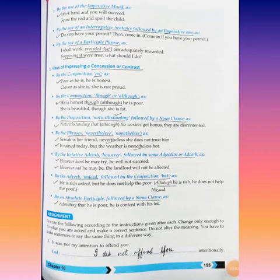Page number 155. By the use of imperative mood: Work hard and you will succeed. Spare the rod and spoil the child. Now by the use of an interrogative sentence followed by an imperative one.